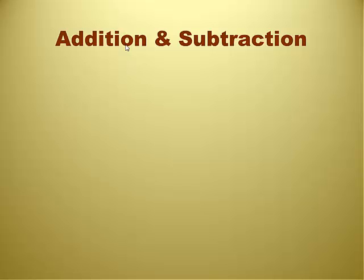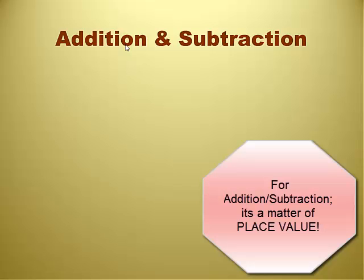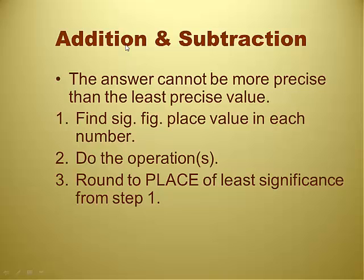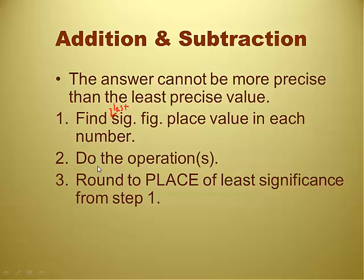You know what, it's a little bit different. They taught us addition and subtraction was one kind of math, and then later on they taught us multiplication and division was another kind of math. Basically, the rules here are you find your last significant place value in each number. You do the mathematical operations, and then you round to the place of least significance from step one. So addition and subtraction is place value, not number. It's place value. This should be clear through an example.